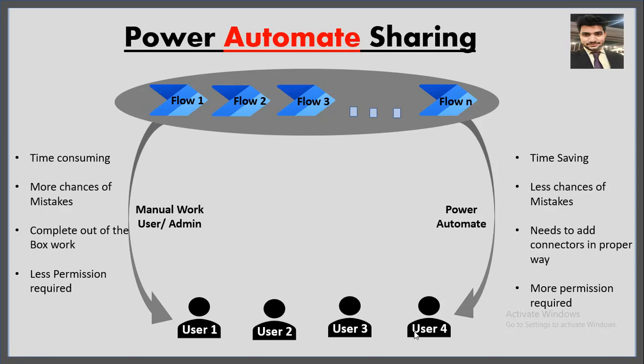The third point is complete out-of-the-box work. In manual sharing, the owner or co-owner of a flow just needs to click the three dots, click Share, and write the email of the person they want to share with. In Power Automate, you need to assemble different connectors to achieve the same result, so it's not purely out of the box.